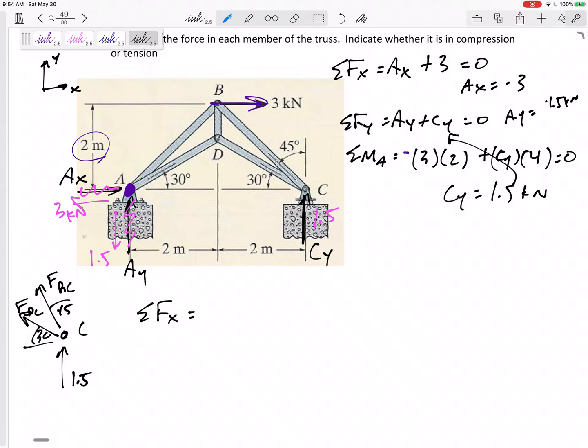So summing the forces in the X direction - look at my axes. X, I choose to the right. So this would be negative FDC cosine 30, and then minus FBC sine 45. That's it, equals zero. And then summing the forces in the Y direction: positive 1.5, positive FDC sine 30, positive FBC cosine 45, equals zero.